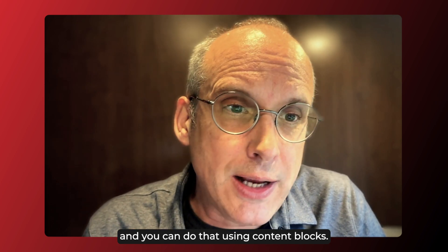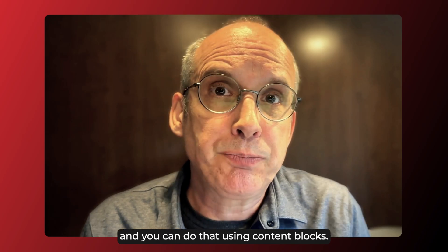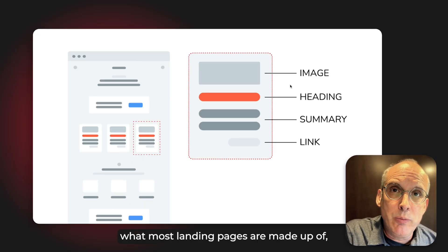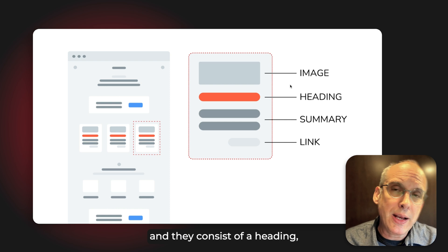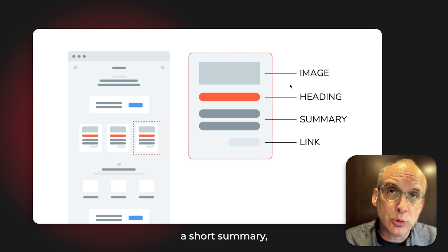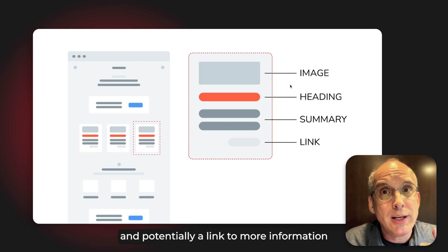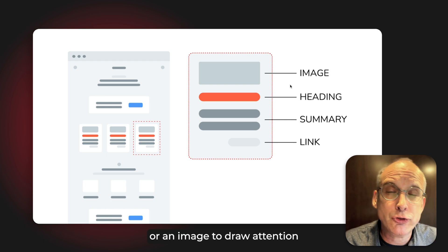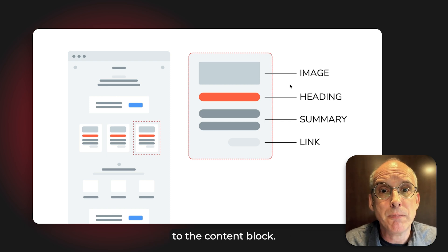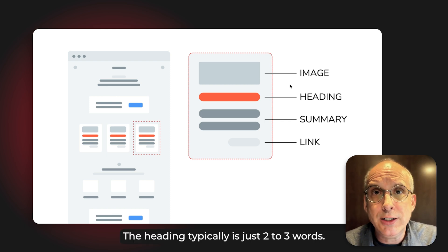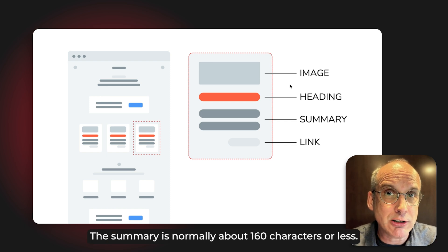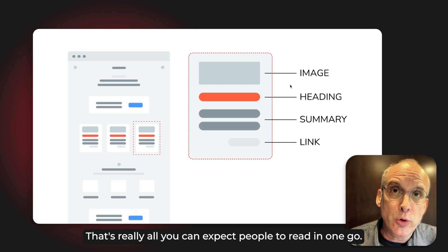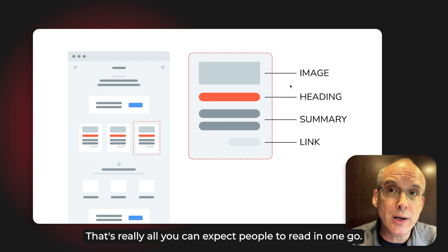You can do that using content blocks. Content blocks are basically what most landing pages are made up of, and they consist of a heading, a short summary, and potentially a link to more information or an image to draw attention. The heading is typically just two to three words, and the summary is normally about 160 characters or less — that's really all you can expect people to read in one go.